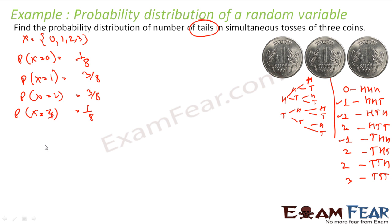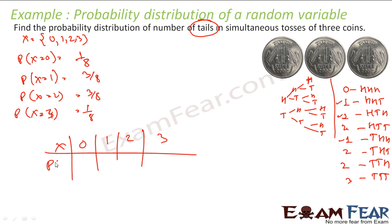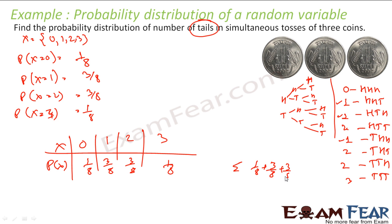Probability of x equal to 3 is 1 by 8 — only one possible outcome. So the distribution is: x can be 0, 1, 2, 3 and P(x) is 1/8, 3/8, 3/8, 1/8 respectively. Adding all: 1/8 + 3/8 + 3/8 + 1/8 equals 1, confirming it is a valid probability distribution.